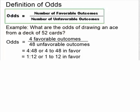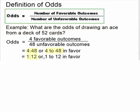We write this as a ratio: 4 to 48 in favor of drawing an ace. Now we can reduce those ratios. We can divide 4 by 4 and 48 by 4 and get a ratio of 1 to 12, or write that as 1 to 12 odds in favor of drawing an ace.